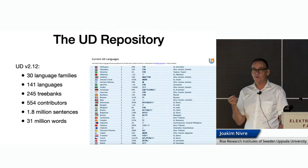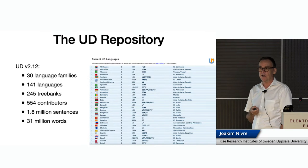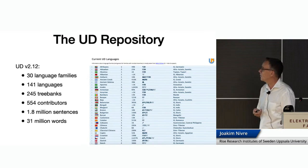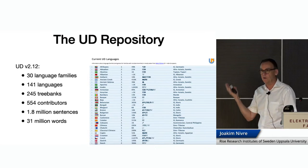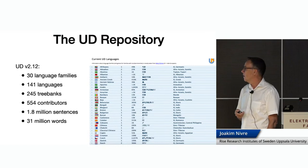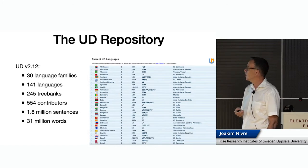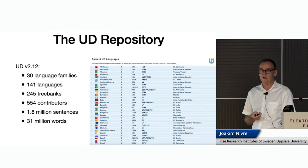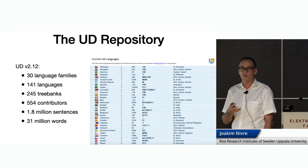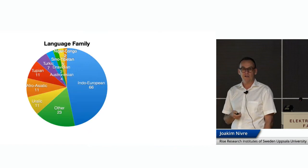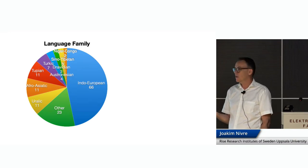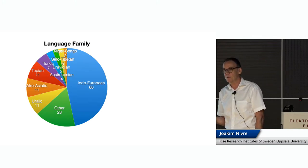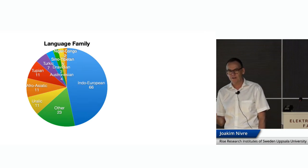That concludes the tour of the annotation guidelines. I now want to say a few words about the current state of the UD repository. In the latest release, we had data from 30 language families. The distribution of data across language families is inevitably biased, but has improved quite a lot over time. In the first release there were 80% Indo-European languages; we're now at about 48%, so less than 50%.